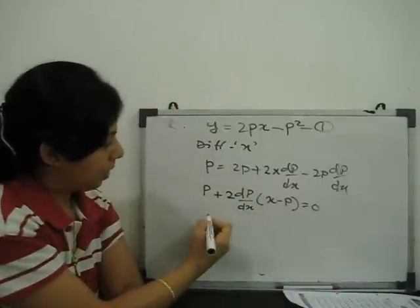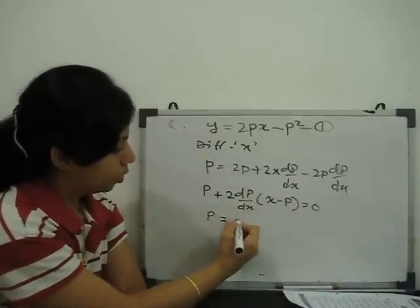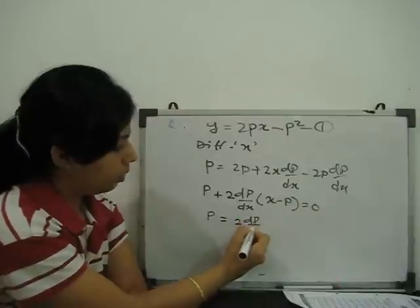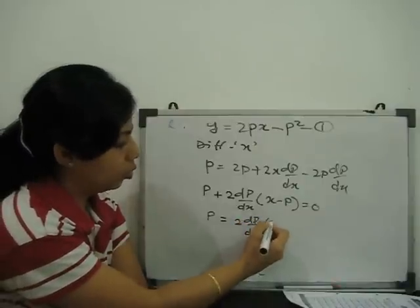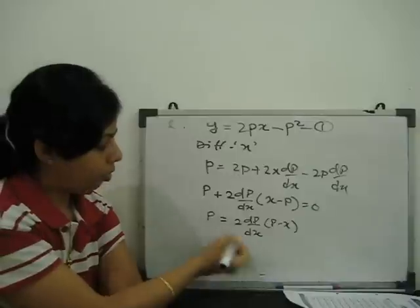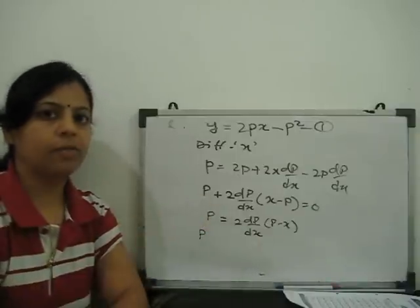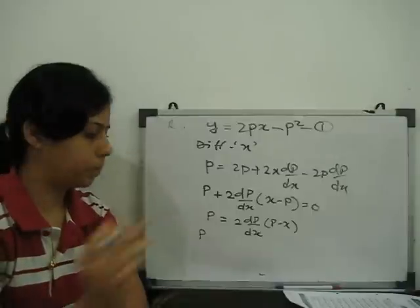Clear? So, next step, what is this? p equal to 2 dp by dx into p minus x. Now, if it comes here, p goes down. It is variable separable in x and p.